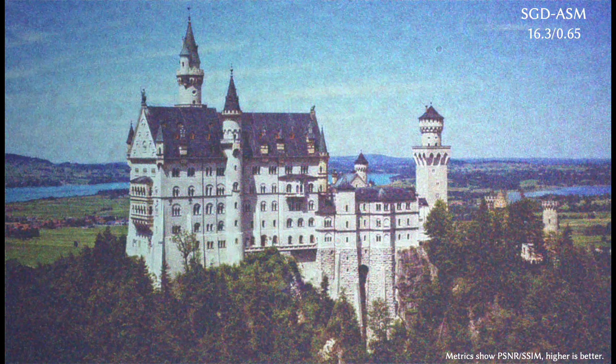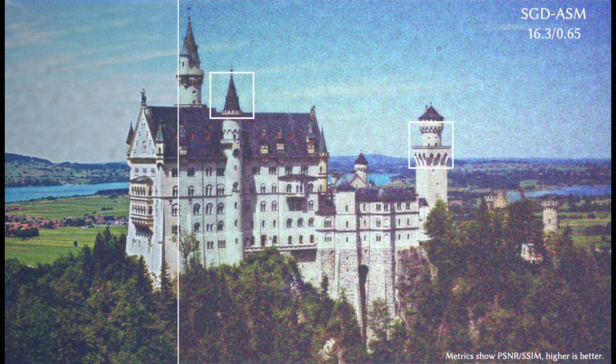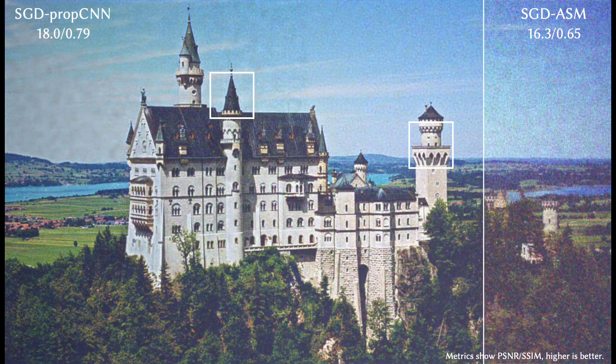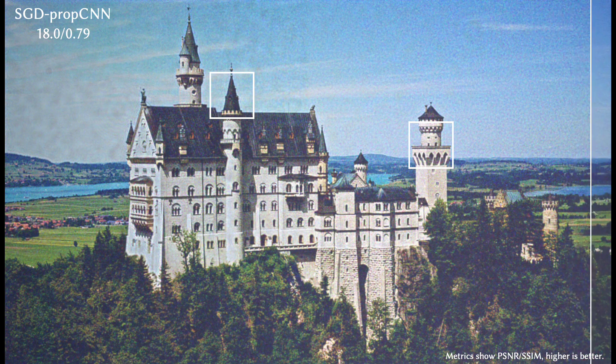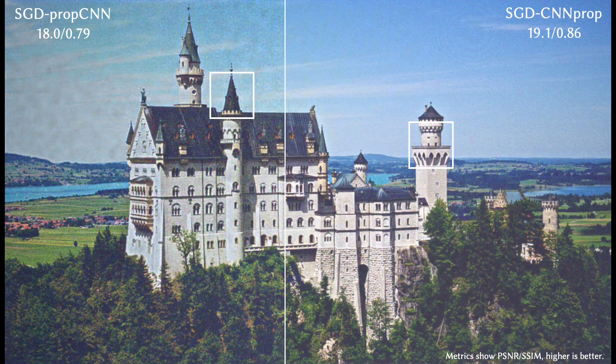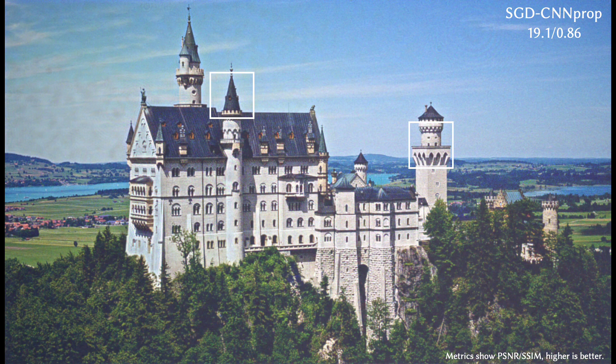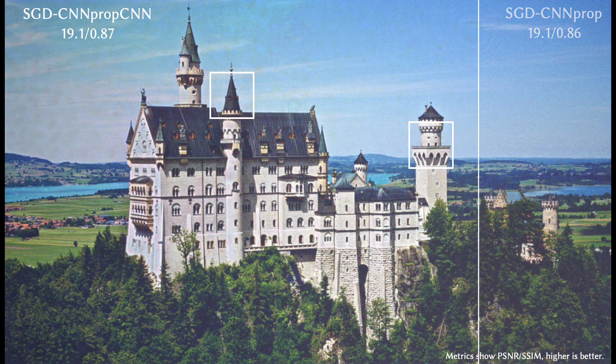Here is an ablation study starting with the ASM model, which includes lots of speckle artifacts. Using a variant of our model with just one CNN improves this result. Using another variant with just one CNN improves it as well. Using both CNNs in our model achieves the best results.